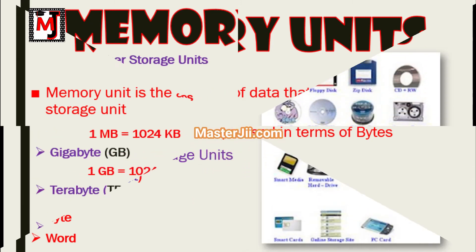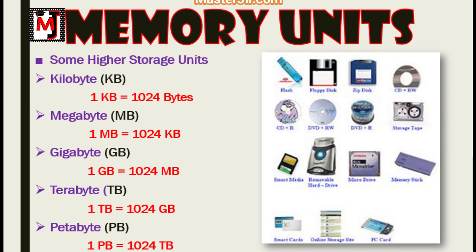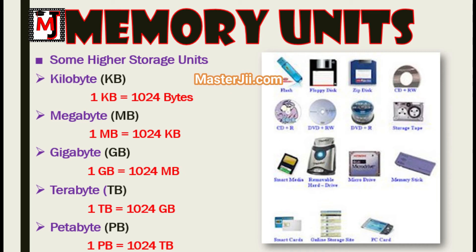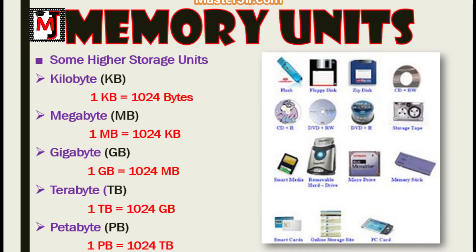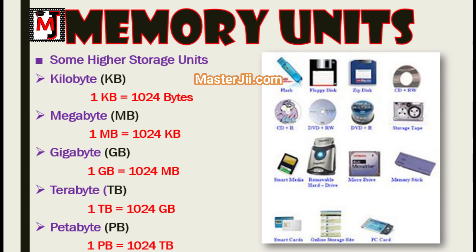Then we will see some higher storage units used in our daily life. First is kilobyte, then megabyte, then gigabyte, then terabyte and petabyte. First, kilobyte — that is KB. 1 kilobyte is equal to 1024 bytes. And then megabyte — that is MB. 1 megabyte is equal to 1024 kilobytes.